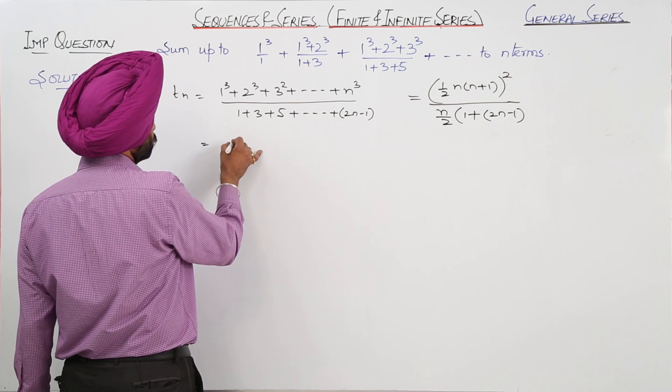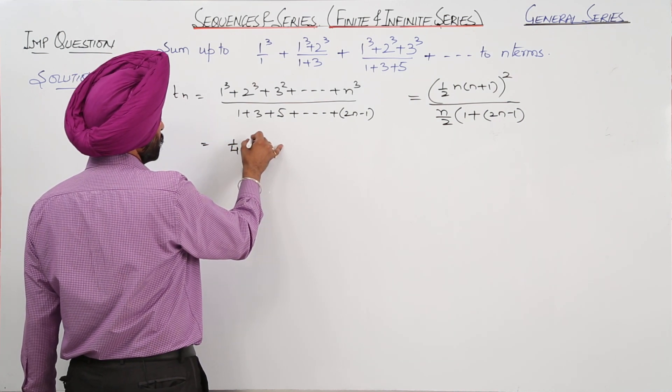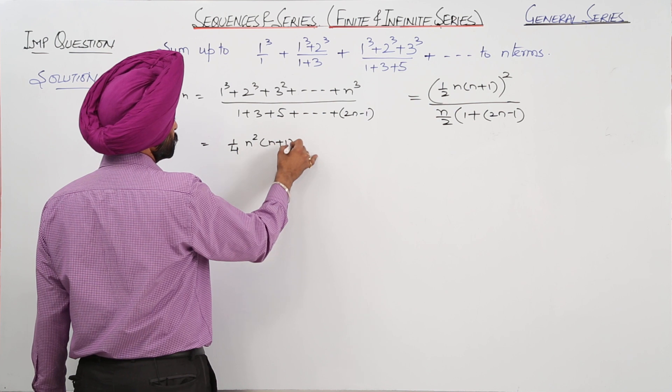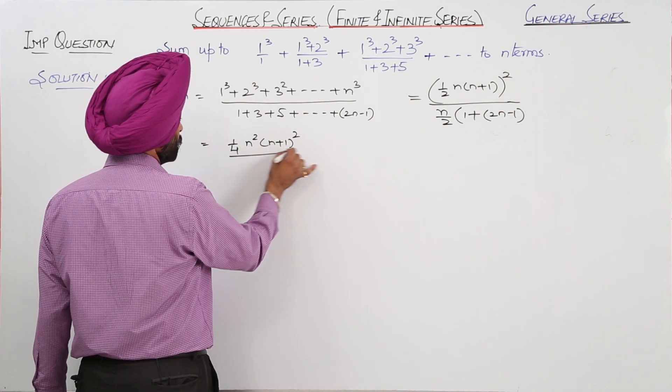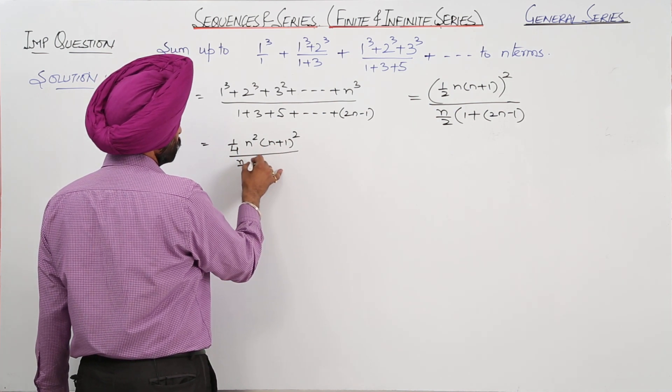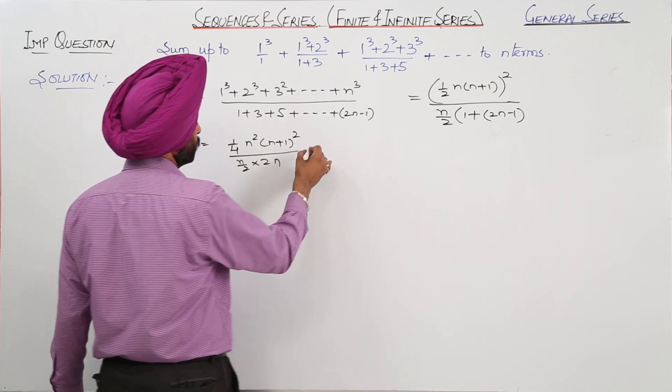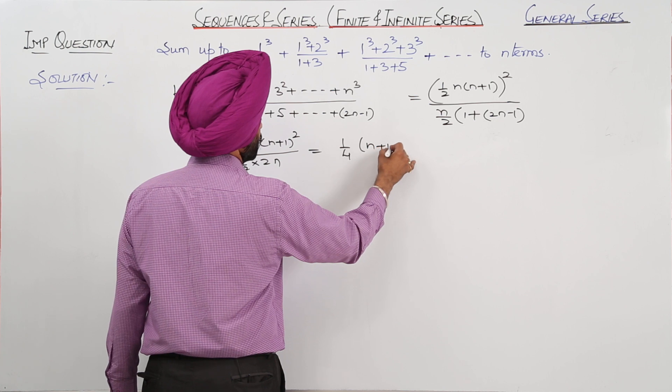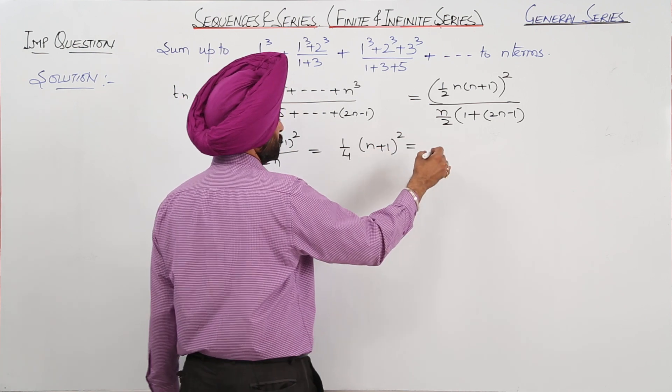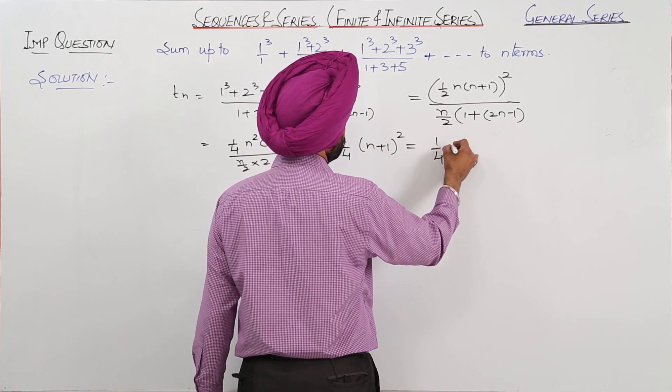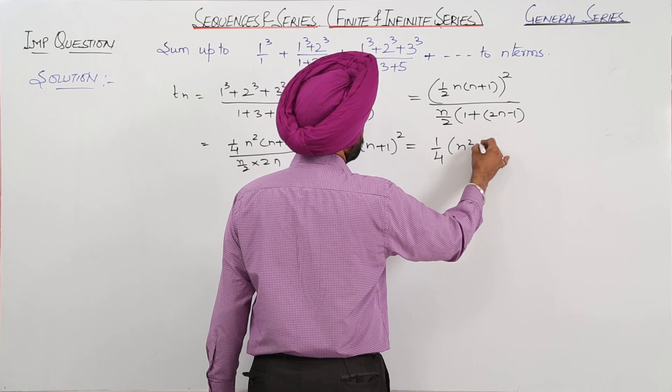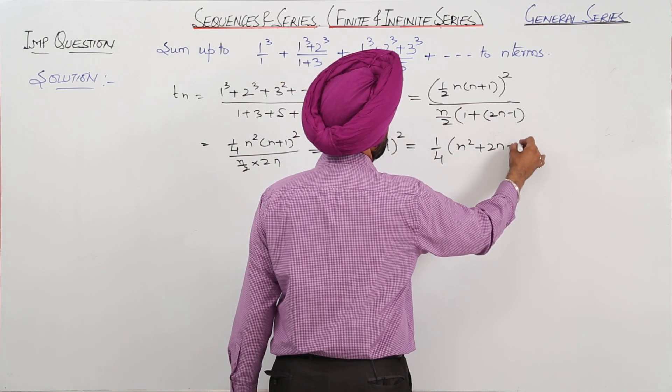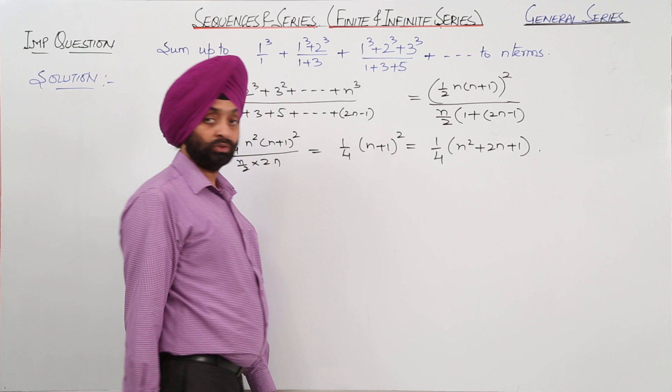Now further this becomes 1/4 n²(n+1)² upon n/2 times 2n. And this becomes 1/4(n+1)². To this we can write it 1/4 n² plus twice of n plus 1. So this is the Tn.